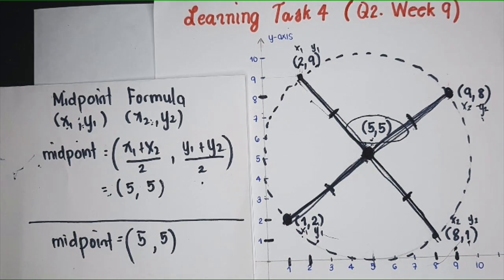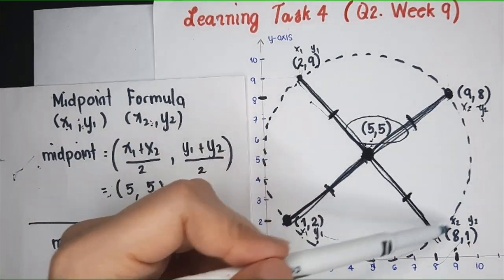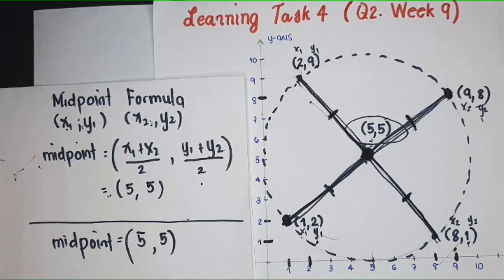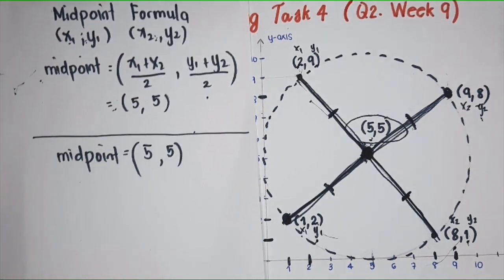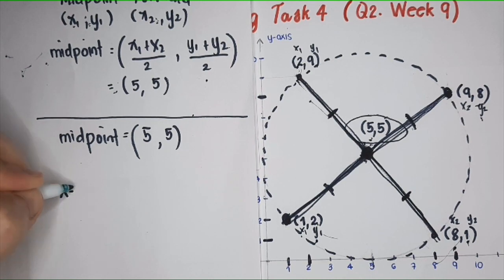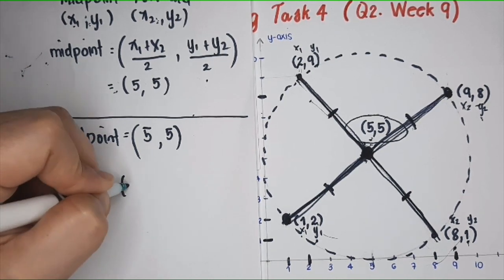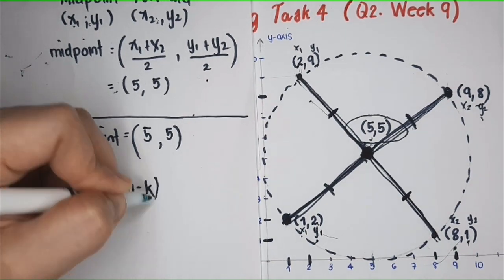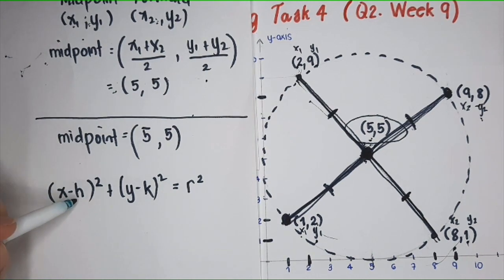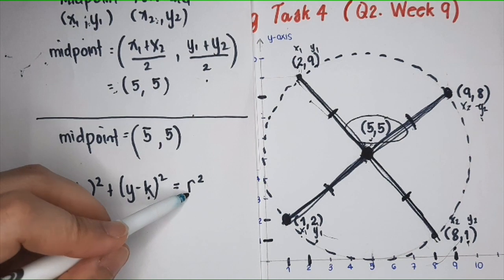And then lastly, for number 3, we are going to write the equation of this circle in standard form. Can you recall what is the standard form of a circle? It's x minus h squared plus y minus k squared equals r squared.